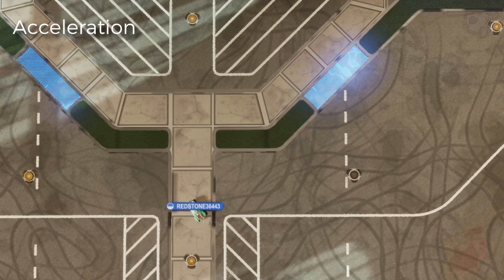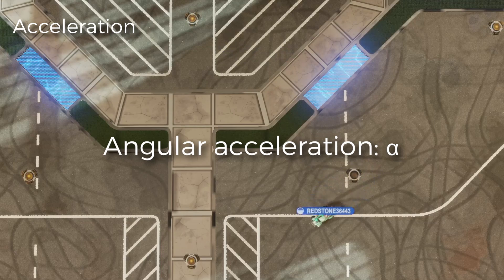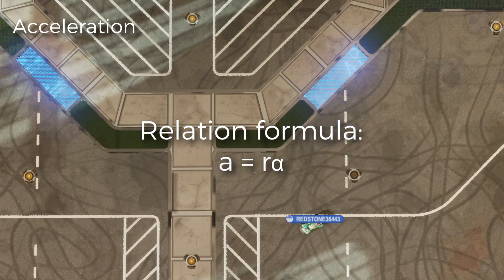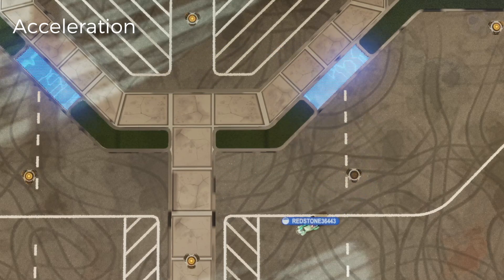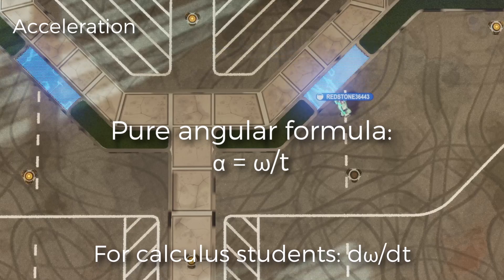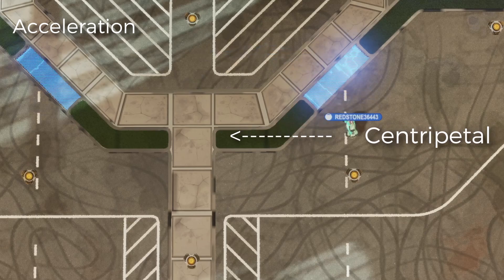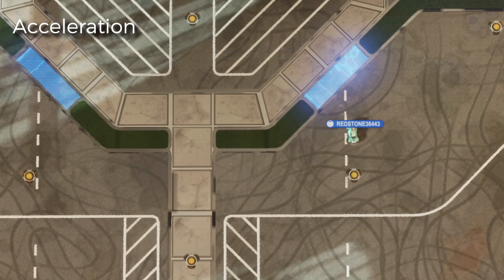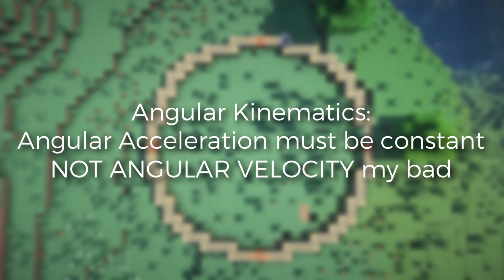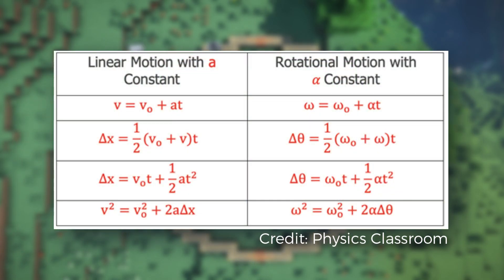Moving on to angular acceleration, we can apply the exact same proof and it comes out the exact same way. Angular acceleration's symbol is alpha. The acceleration conversion formula is A equals R times alpha. The angular acceleration formula is omega divided by time. It's important to note that angular acceleration is not the same as centripetal acceleration — centripetal acceleration is towards the middle, while angular acceleration is tangential. With these three values, kinematics is now possible as long as angular acceleration is constant, the exact same criteria as linear kinematics. All values translate one-to-one, so if you know the linear kinematic equations, just replace them with their angular counterparts.